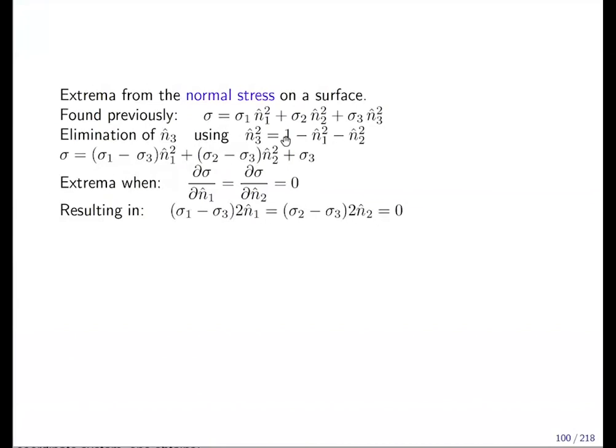This is the norm of the normal vector minus n one square minus n two square gives you n three square. Now when you insert this, then we get sigma equals (sigma one minus sigma three)n₁² plus (sigma two minus sigma three)n₂² plus sigma three. Sigma was the normal stress as I sketched it and as it was on the previous slide.